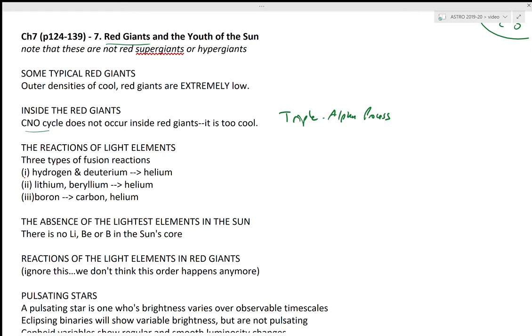The section on reactions of light elements covers three types of fusion reactions. This gets to why we're pretty sure that lithium and beryllium aren't the source of any kind of solar fusion. Hydrogen and deuterium forming helium also forms energy. Boron fusing to form carbon or helium also forms energy as well.